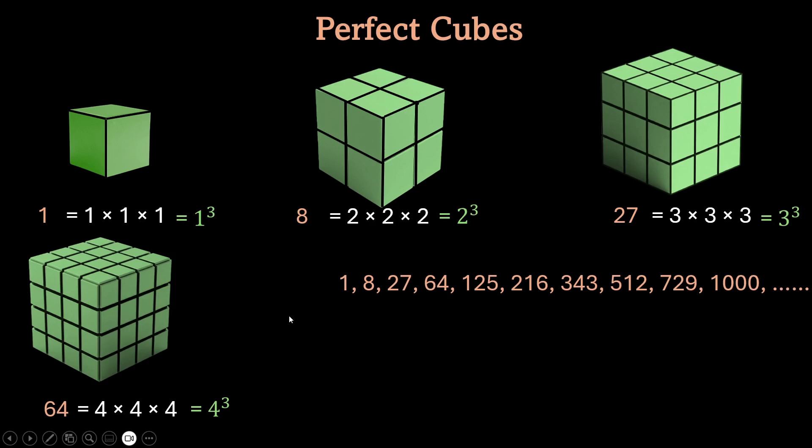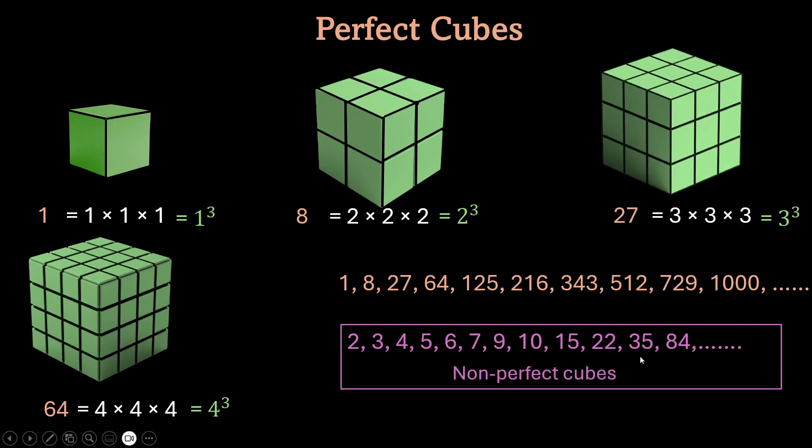Then there are some other numbers, for example 2, 3, 4, 5, 6, 7, or basically all the numbers other than these perfect cubes, which cannot be written as a certain number multiplied to itself 3 times. That is, which cannot be expressed as a number raised to power 3. And these numbers are called non-perfect cubes.